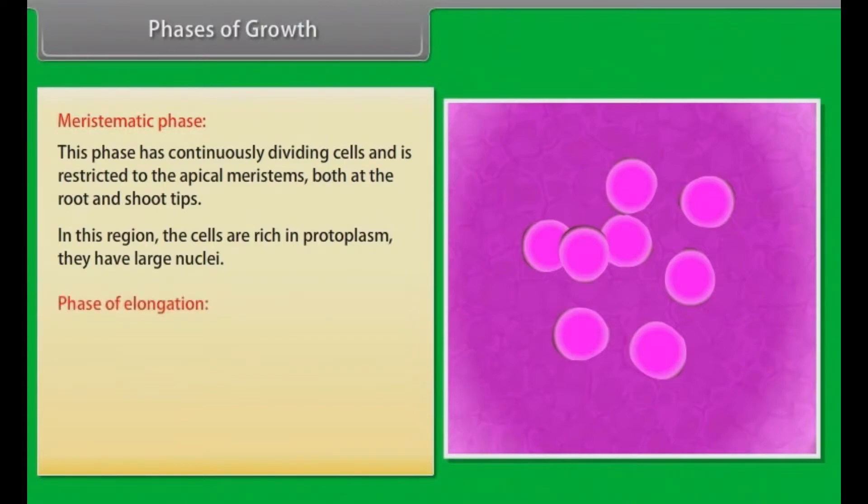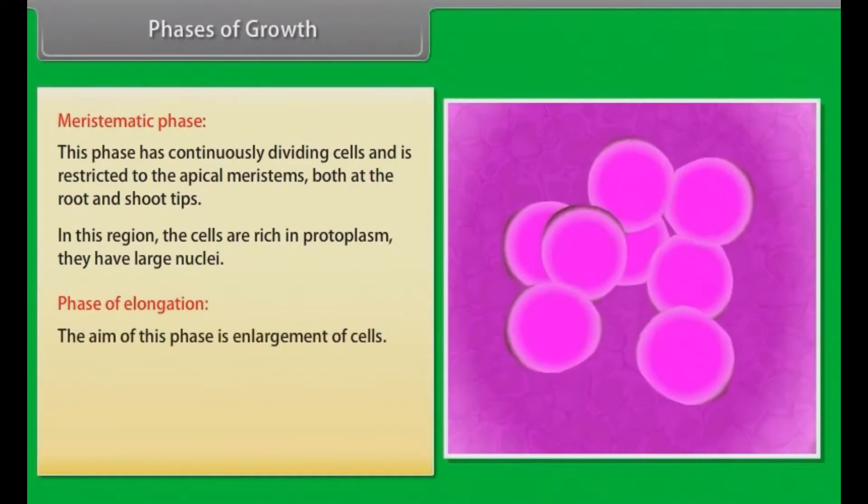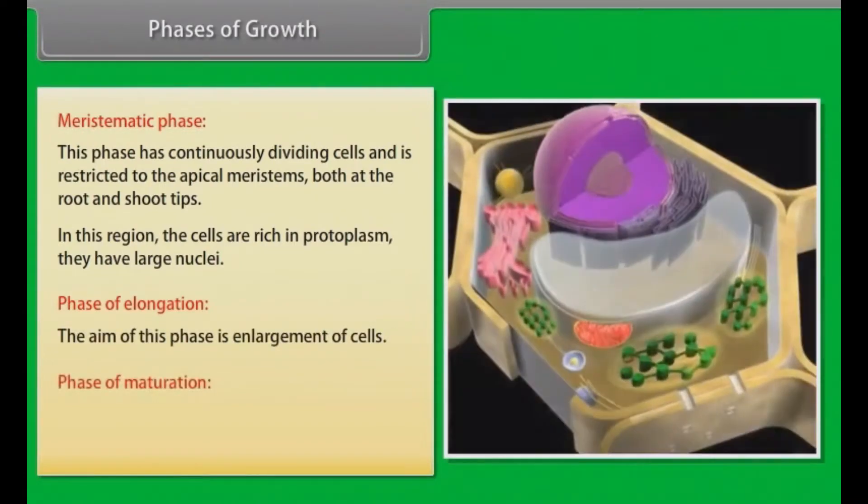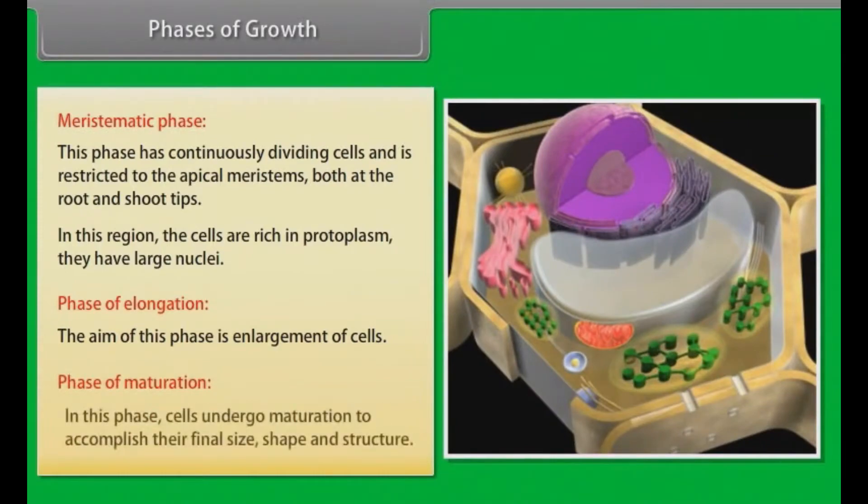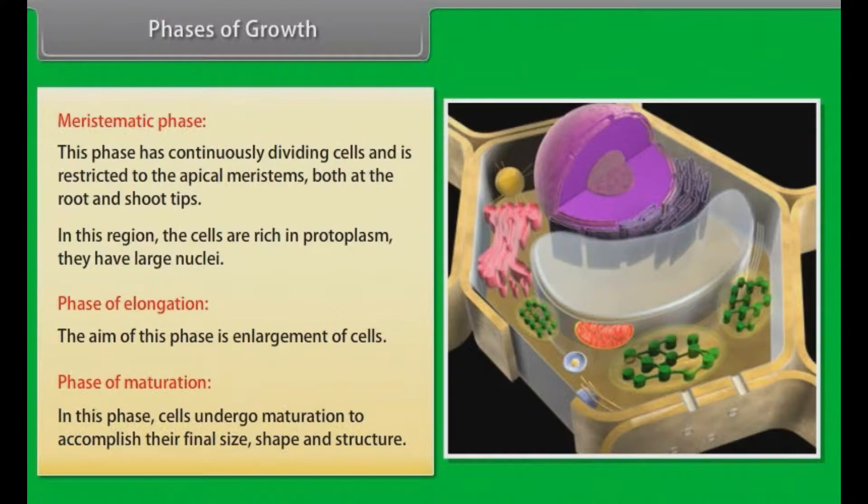Phase of elongation: the aim of this phase is enlargement of cells. Phase of maturation: in this phase, cells undergo maturation to accomplish their final size, shape and structure.